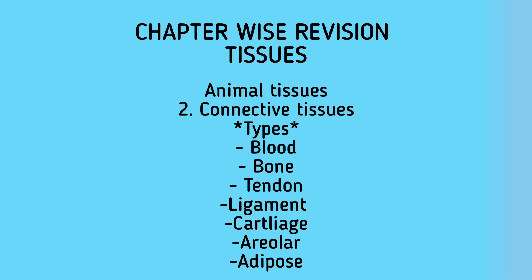The second type is connective tissues, which connect and bind different tissues and organs. Cells are embedded in an intercellular matrix that may be solid, fluid, jelly-like, or hard. The first type of connective tissue is blood, which transports gases, digested food materials, hormones, and waste materials. Blood consists of a fluid matrix called plasma containing proteins, salts, and hormones. Different blood cells include RBCs, WBCs, and platelets, each with different functions.